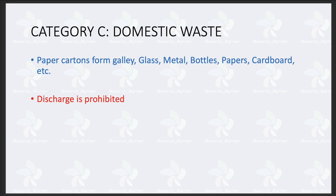We have seen before things up to Category B — food waste and how to dispose of food waste. Now what is domestic waste? Basically it consists of paper cartons from galley, glass, metal, bottles, paper, cardboard, etc. What is general waste? Like general accommodation — waste generated in our cabins, waste generated in our store, like biscuit packages, cardboard, etc. That all comes under domestic waste.